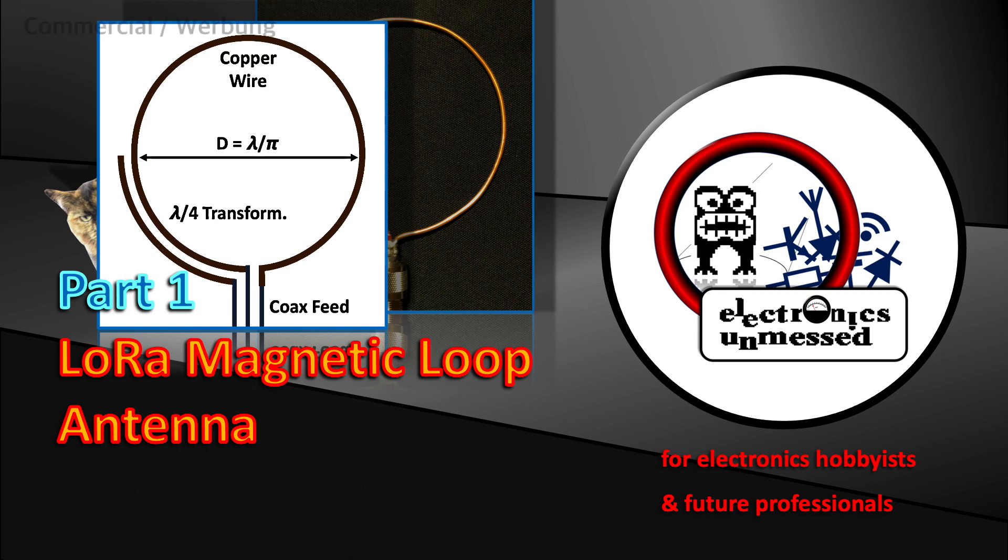In an earlier episode, I tried a magnetic loop antenna for a LoRa receiver. I got some promising results, which motivated me to develop an improved version. In this episode, I will disclose some surprising real-life measurements.